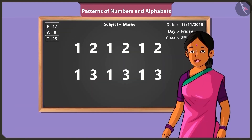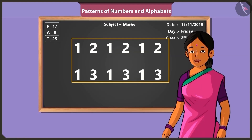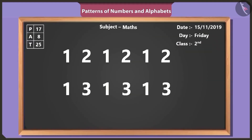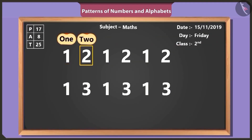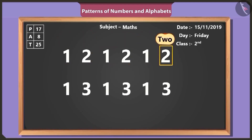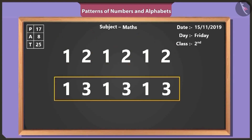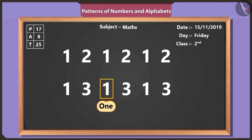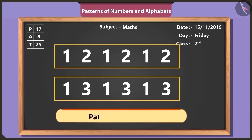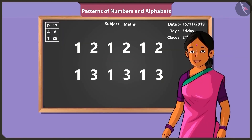Now can you tell me, what is special about these numbers? Here, the first line has number one and two repeated again and again. And in the second line, number one and number three are repeated. Oh yes, this has become a pattern of numbers. Rightly said, Vinny.